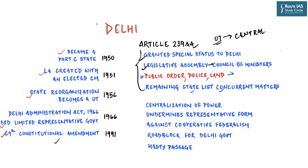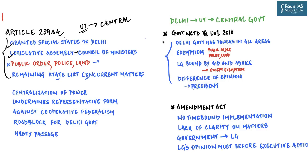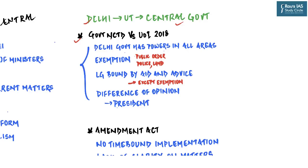When the Aam Aadmi Party came to power in Delhi, they went to the Supreme Court, which delivered the 'Government of NCTD vs Union of India 2018' judgment. The Supreme Court first ruled that since Delhi was a union territory, all powers ultimately lay with the central government and not the elected government of Delhi. However, apart from reinforcing the Centre's claim, the Supreme Court also observed that the Delhi government has powers in all matters except public order, police, and land.